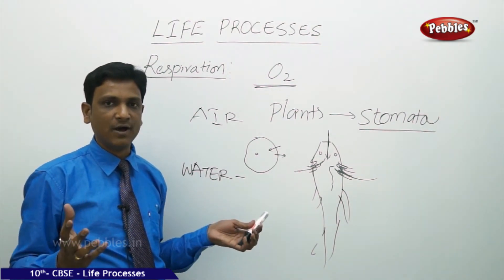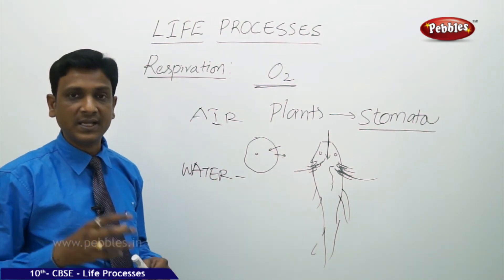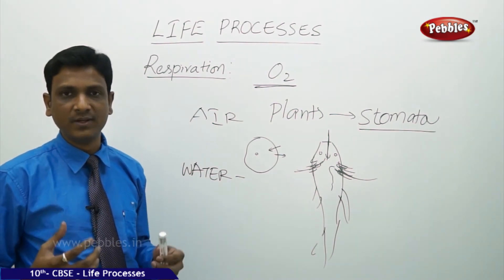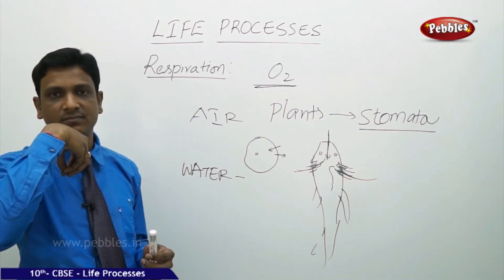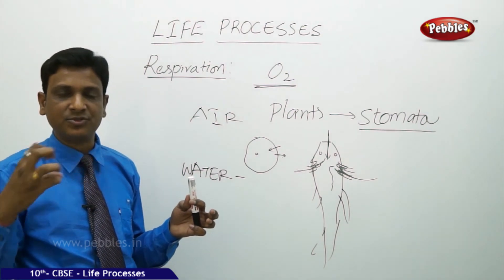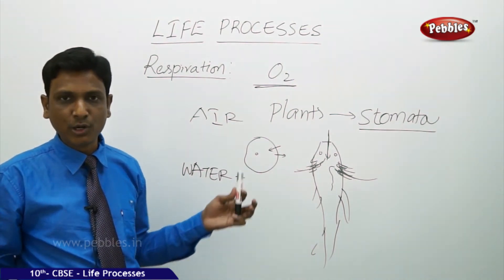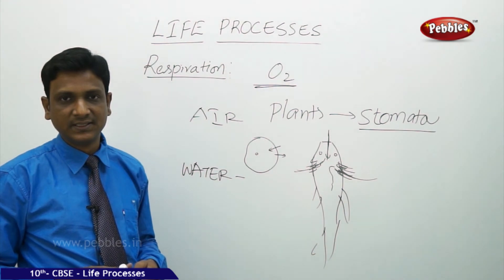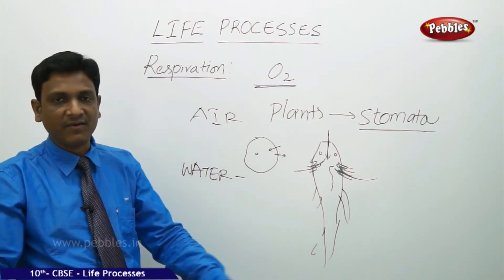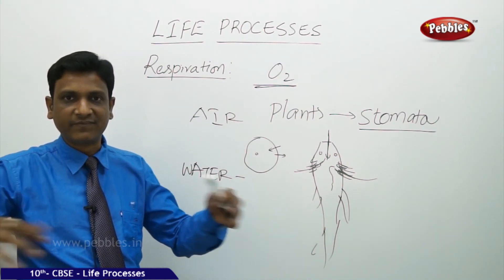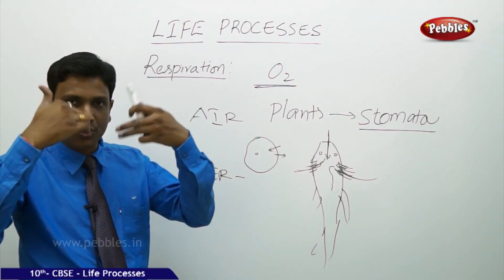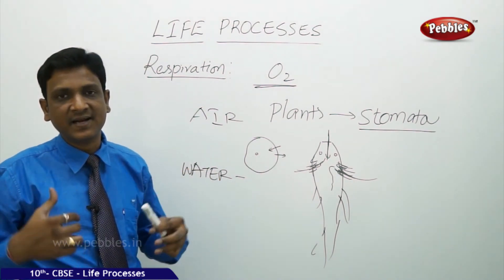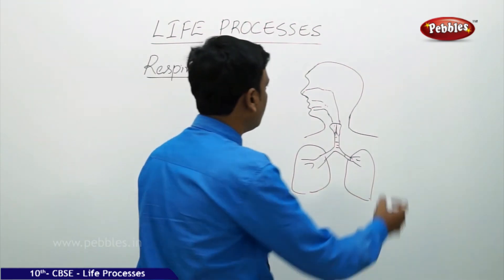Terrestrial animals have plenty of oxygen — 21% in the atmosphere — and have developed special structures to absorb it. In humans, we take air into a special structure where diffusion of oxygen takes place. We need a lot of oxygen, so we need a large surface area for diffusion. We cannot take oxygen through our skin even though it has a large surface exposed to air. The air must go into a structure where gas diffusion takes place — that structure, well protected inside the body, is the lungs.